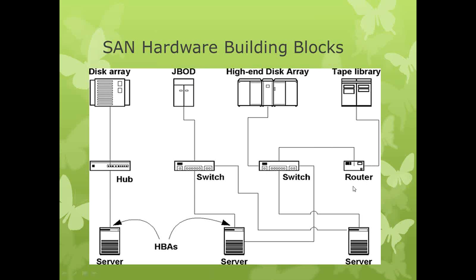The elements of the fabric include hubs, routers, and switches. The most common switches are the Cisco switches, Brocade switches, McData switches — B-type, M-type, and C-type. The server has an adapter called the Host Bus Adapter. The purpose of this HBA is to send and receive SCSI commands from the server to the storage array.